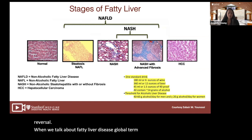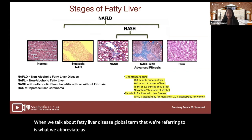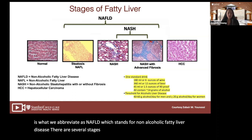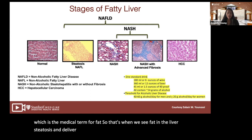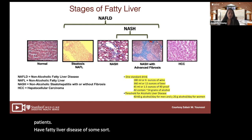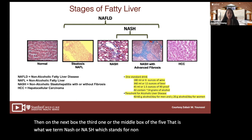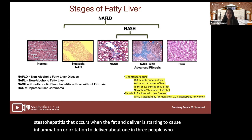When we talk about fatty liver disease, the global term we're referring to is NAFLD, which stands for non-alcoholic fatty liver disease. There are several stages of NAFLD. The second stage from the left is called steatosis, the medical term for fat in the liver. Steatosis is quite common and rates are rising; currently about one in three to one in four patients have fatty liver disease of some sort. About one in three people with steatosis will go on to develop NASH, or non-alcoholic steatohepatitis, when the fat in the liver starts causing inflammation or irritation.